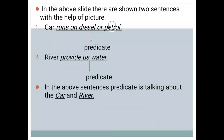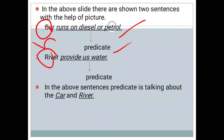In the above slide, two sentences are shown. First: car runs on diesel or petrol — car is the subject, runs on diesel or petrol is the predicate, telling how the car runs. Second: river provides us water — river is the subject, provides us water is the predicate. The predicate is talking about the car and the river.